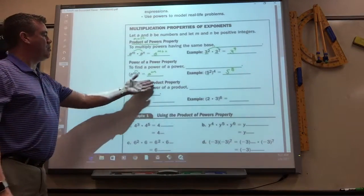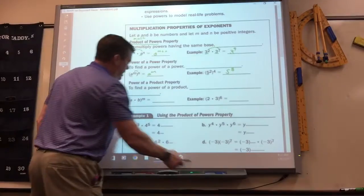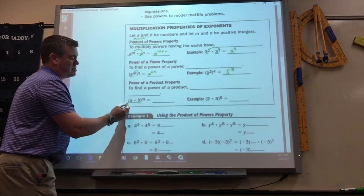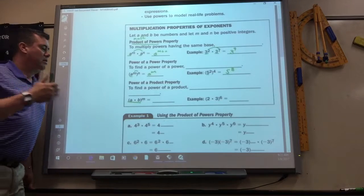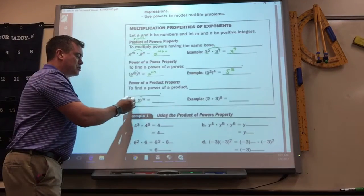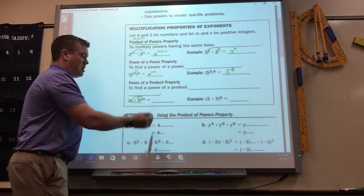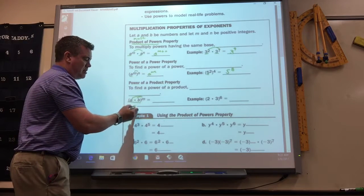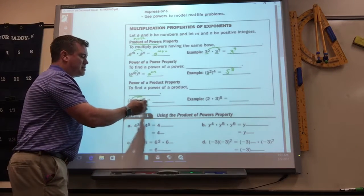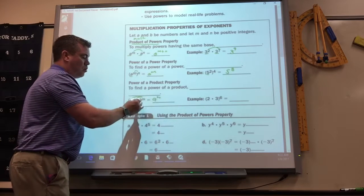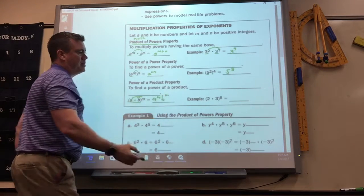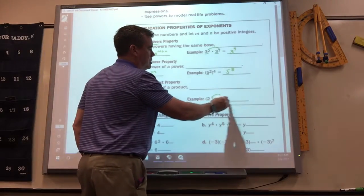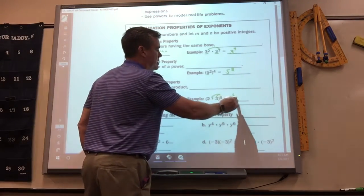Then, combining that power of a product is if you've got something in parentheses and they're multiplied, they've got to be hooked together. You just do each one raised to that power. Because if there's nothing there, that means it's a 1. So 1 times M is M. It would be A to the M, B to the M. So like here, it would be 2 to the 6th, 3 to the 6th.